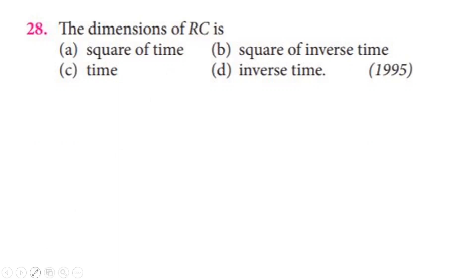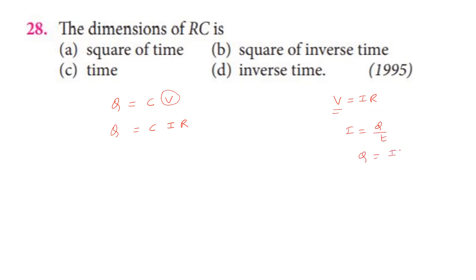For capacitance: charge equals capacitance into potential, and charge equals current into time. So current into time equals capacitance into potential. Using resistance relation, time equals C into R.